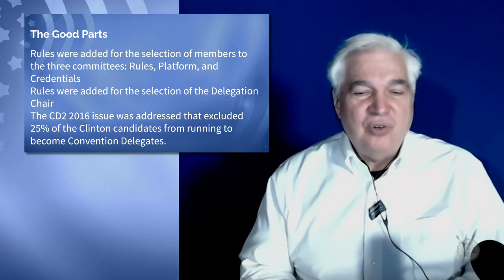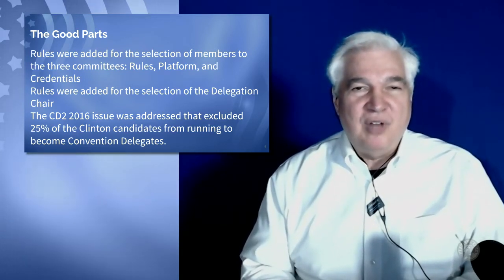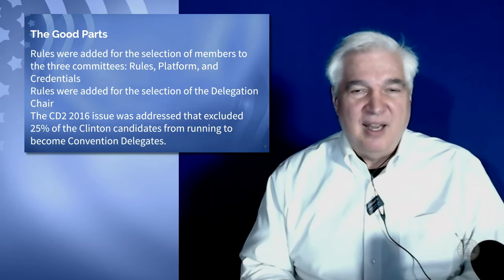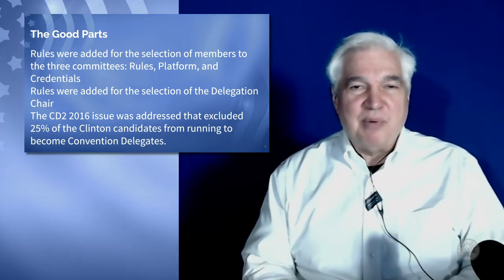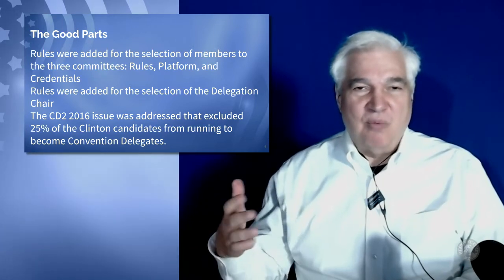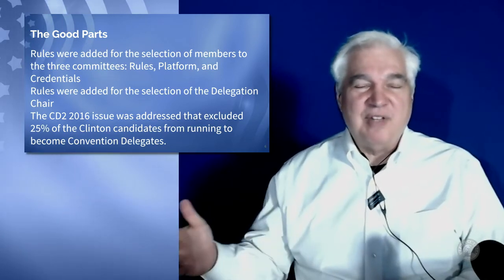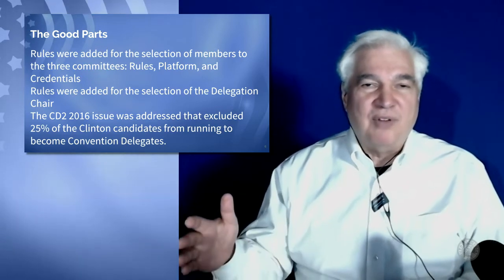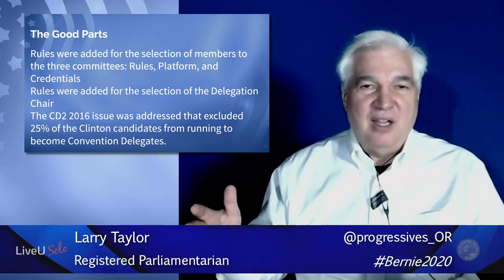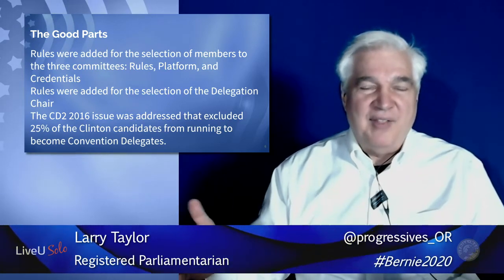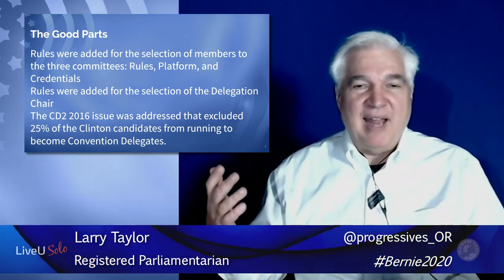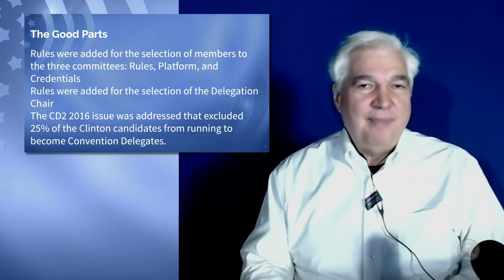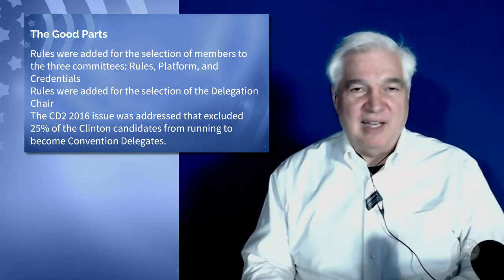The CD2 issue of them having two conventions was addressed in this plan. In 2016, 25% of males in one half of the CD and 25% of the females in the other half who were pledged for Hillary Clinton were ineligible to run because they only had two positions to run for with two separate conventions. That has been addressed, although it appears some more work needs to be done because what is proposed in the plan actually violates the DPO bylaws.